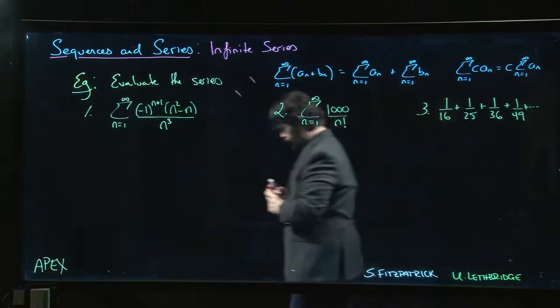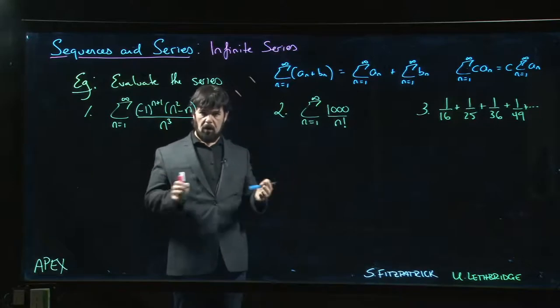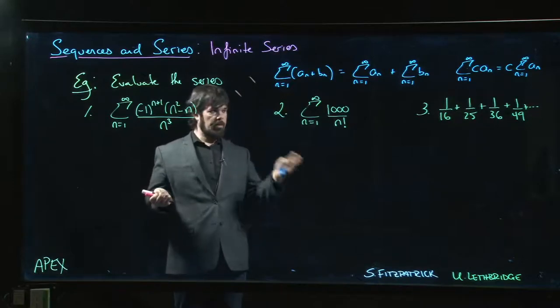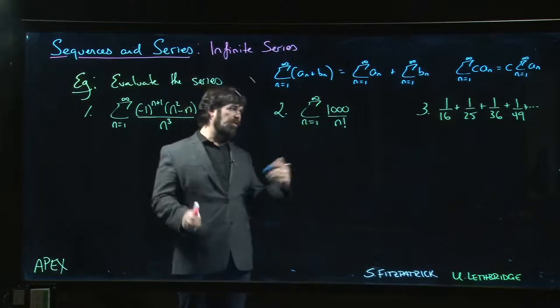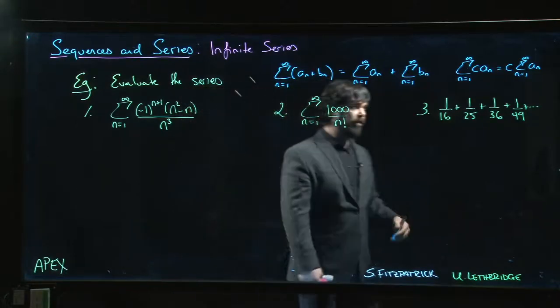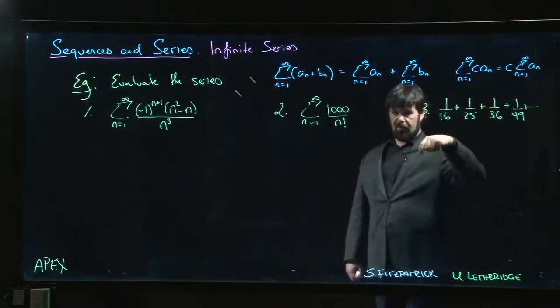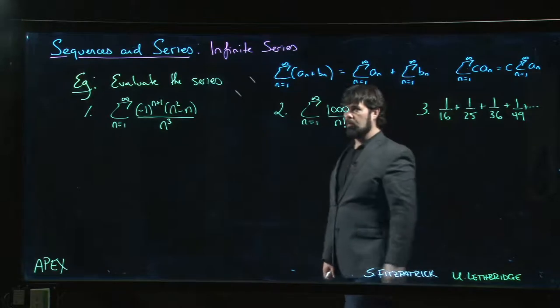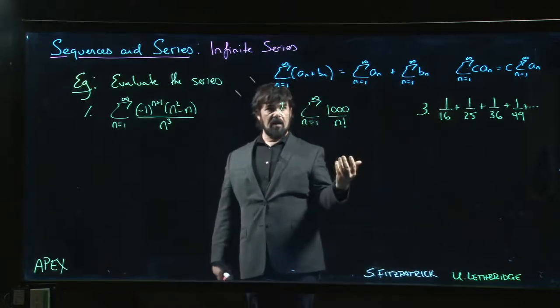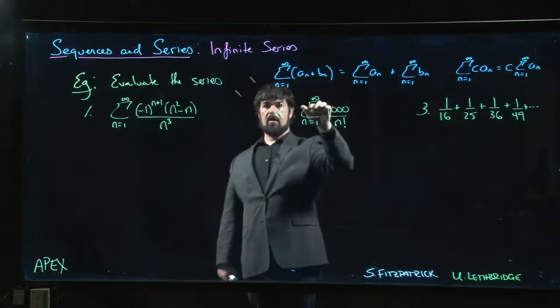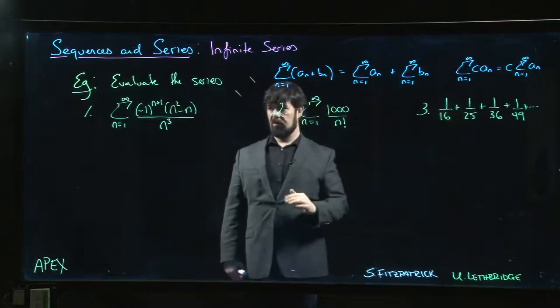And the reason you can do that is that for each of the partial sums, it's just a constant multiple you can factor out. And then the series is the limit of that sequence of partial sums, and we know that for limits, if you have a constant multiple inside the limit you can bring it out. We know that for finite sums this is valid, and the limit of a sum is the sum of the limits.